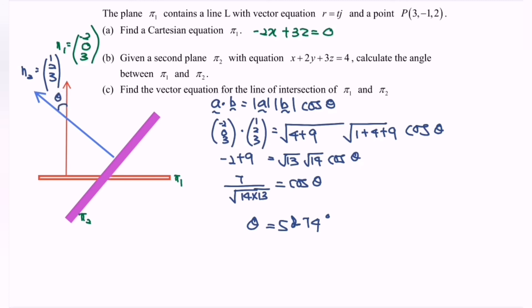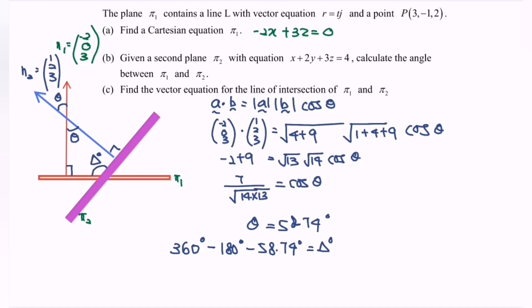We are interested in the angle between planes pi 1 and pi 2, which is the interior angle (triangle theta). Since each normal is perpendicular to its plane, we account for the two 90° angles. The final angle = 360° − 180° − 58.74°, so the answer is 360 − 180 − 58.74 = 121.26°. That is the angle between the two planes.